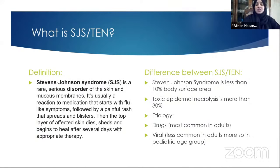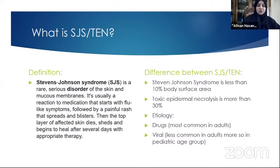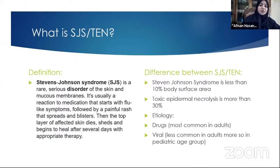What is Stevens-Johnson syndrome? It is a rare, serious disorder of the skin classified as a dermatological emergency. It's a reaction to medication or, less commonly, viruses. The patient comes in with flu-like symptoms — in our patient, fever, flu-like symptoms, and conjunctivitis. She was discharged as a viral infection and returned two days later with a painful spreading, blistering rash. The top layer of skin dies, sheds, and begins to heal after several days with appropriate therapy. The difference between SJS and TEN is the body surface area: SJS is less than 10%, TEN is more than 30%, and SJS-TEN overlap is 10-30%.